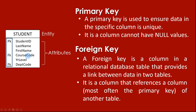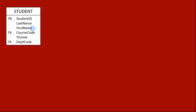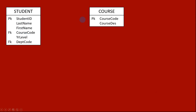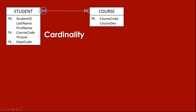To better understand that, let's look at this example. We have the Student entity with its attributes, and then we have another entity which is Course. We can see that the primary key of the Course entity is the course code. As mentioned, when one entity has a foreign key coming from another entity, they have a relationship. So we write the relationship between the two entities like this, using a line with specific symbols.